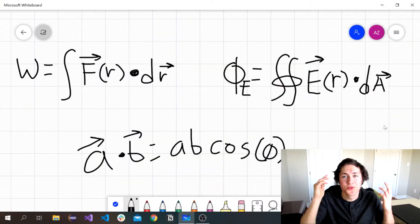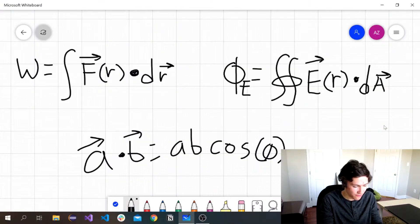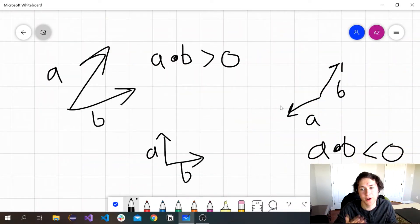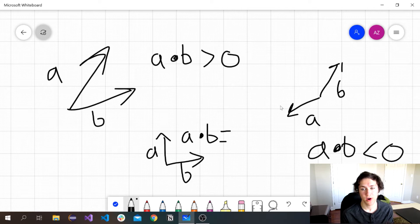So why is this one thing that you learned a while ago in physics to calculate work and electric flux, why is that being used here? Well, let me quickly explain what the dot product is. On a high level, the dot product is a measurement of how similar two vectors are.